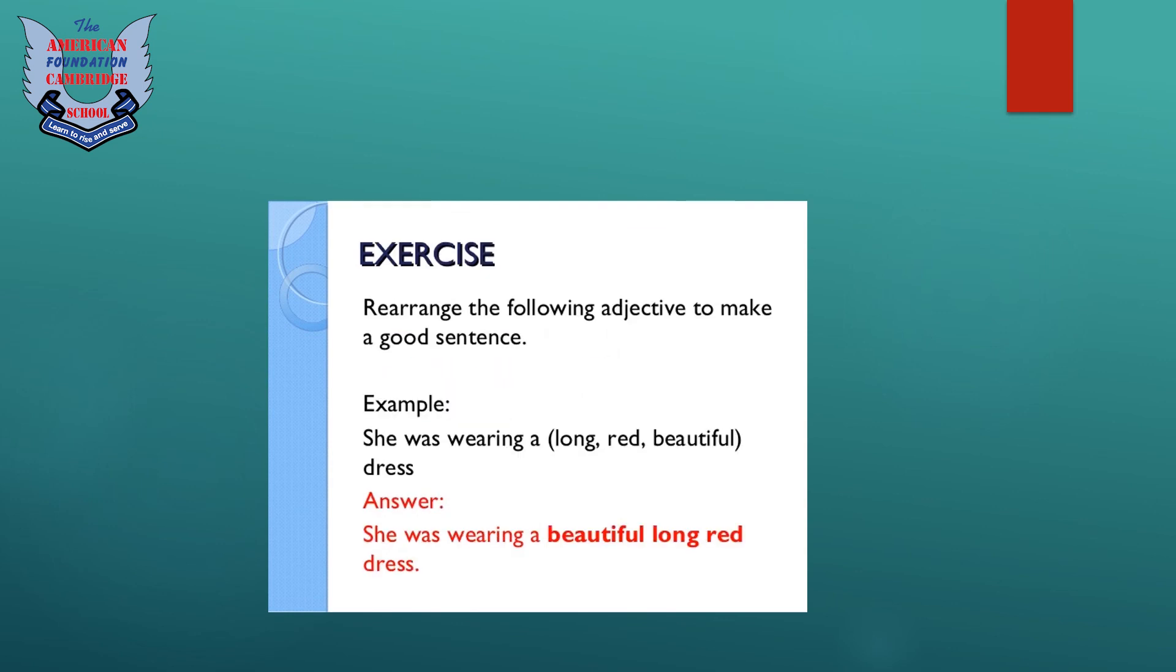Moving towards the exercise which will let you know whether you are prepared for this topic or not. Rearrange the following adjectives to make a good sentence. Now here is an example: she was wearing a long red beautiful dress, which is incorrect. You have to arrange these sentences into the order according to the rule of order of adjectives. The answer is written here: she was wearing a beautiful long red dress.